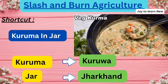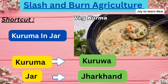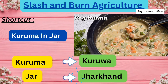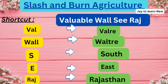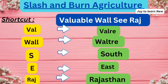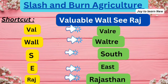The next shortcut is 'Kurma in Jar.' Kurma refers to Kurva, and Jar refers to Jharkhand. So Kurva is the name for slash and burn agriculture in Jharkhand.